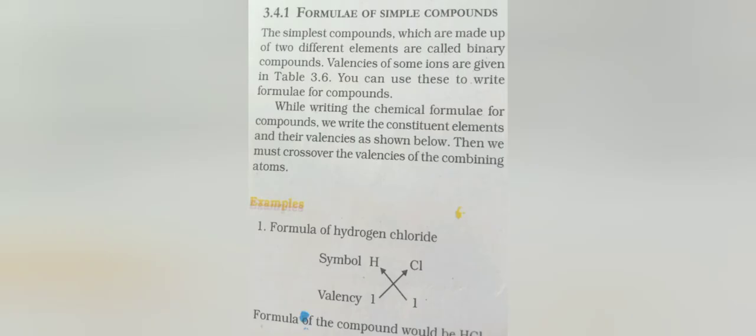Next is our formula of simple compounds. The simplest compounds which are made up of two different elements are called binary compounds. Compounds that are made by combining two different elements are called binary compounds. Valencies of some ions are given in table 3.6. You can use this to write formulas for compounds. We can use it when we write the formula of a compound.